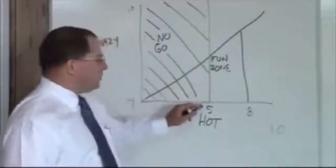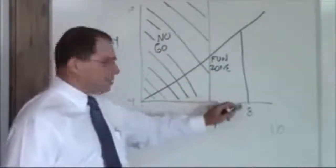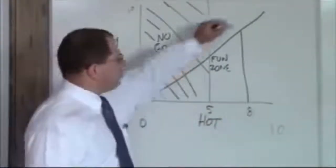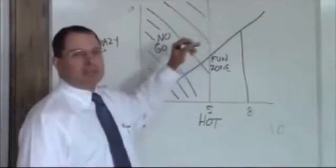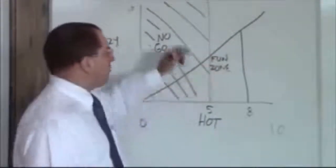So that's the fun zone above a five hot, below an eight hot, and below the crazy line. This means these are most of the time not crazy.